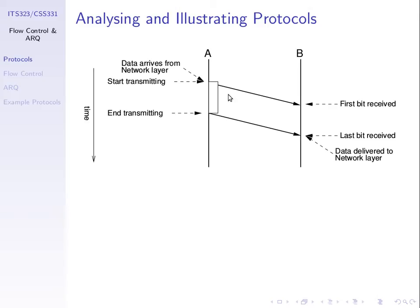On the vertical line, as we go down, time increases. Imagine we start a timer at zero when two computers begin communicating using some protocol. Graphically, the top is time zero and going down the timer increases. In this example, at computer A the user presses a send button, which triggers the protocol to send a frame from A to B.